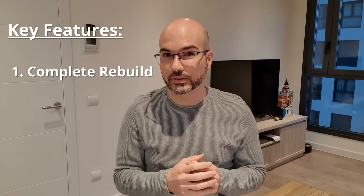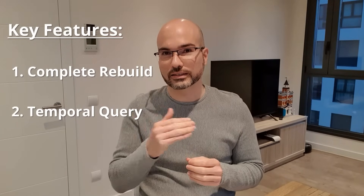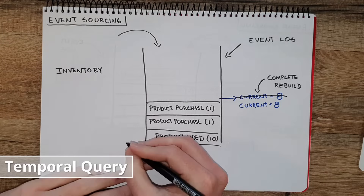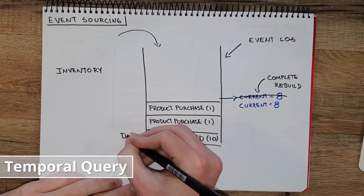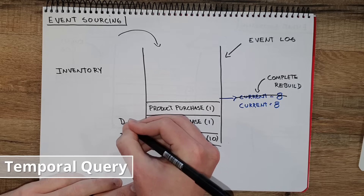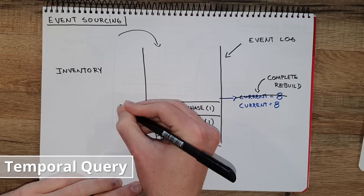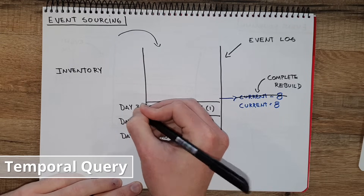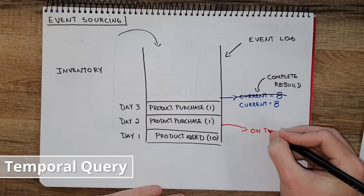Another thing you can do with event sourcing is temporal queries, where you can go back in time and see what the state was before. For example, let's say each of these transactions happened on different days. On day one we added 10 products, on day two we purchased one, and on day three we purchased another one. So we can go back and see what the state was on day two or day one.